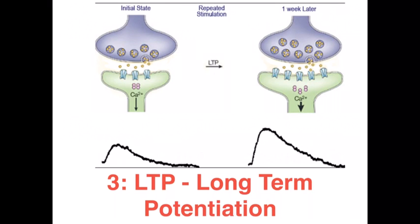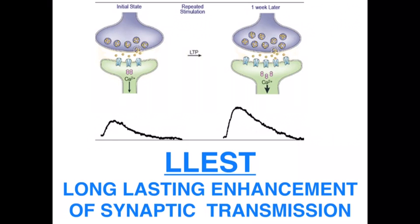And thirdly we get LTP — long-term potentiation — which refers to the long-lasting enhancement of synaptic transmission that occurs by regular revisitation of these declarative memories. This means that we've got a very efficient neural trace that, when activated, enables us to easily retrieve things like somebody's name, passwords, a mathematical rule, etc.